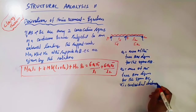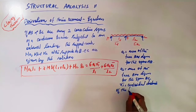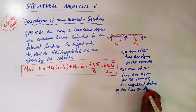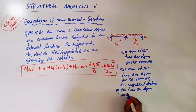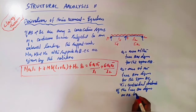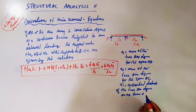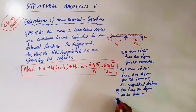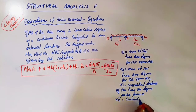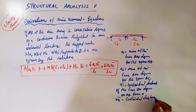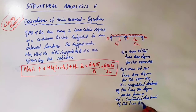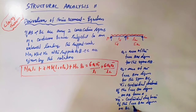X1 bar is the centroidal distance of the free bending moment diagram on AB from A. Similarly, X2 bar is the centroidal distance of the free bending moment diagram on BC from C.